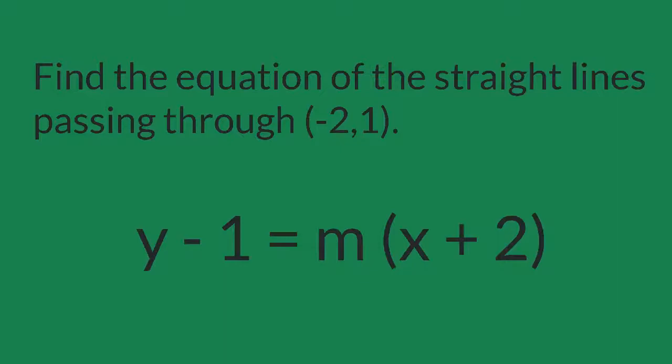This equation is taken from the point slope form of the line. Then, differentiate once this equation because there is only one arbitrary constant, which is m.